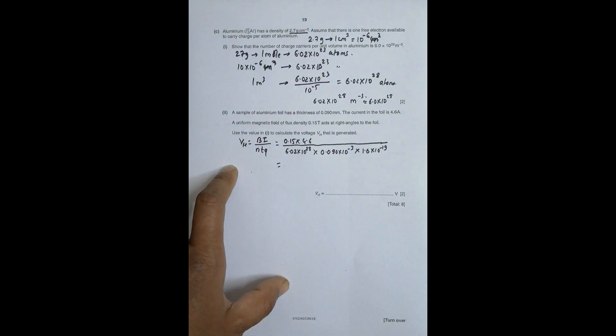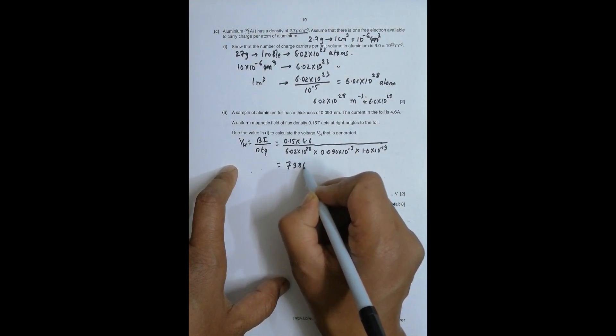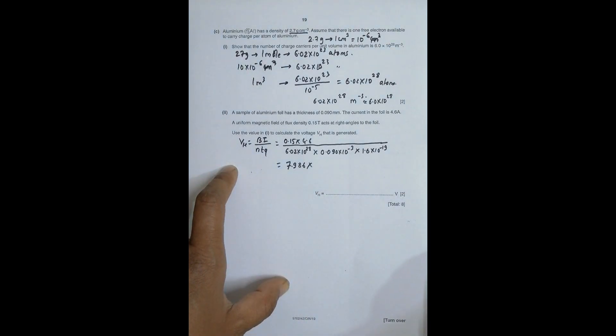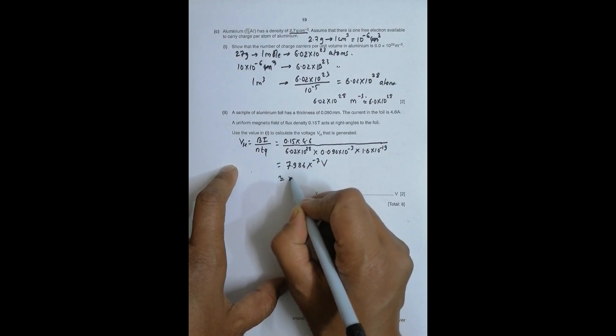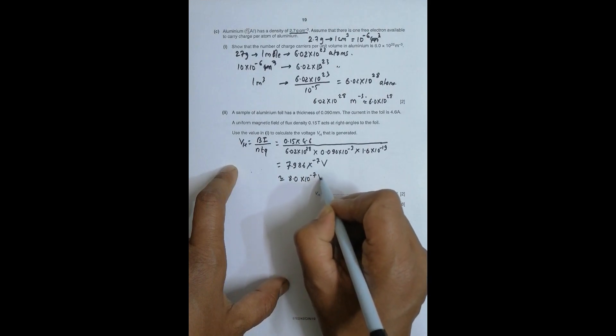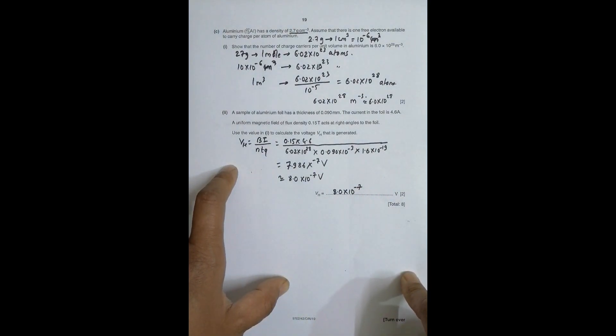Let me do the calculations. So 0.15 times 4.6 divided by bracket 6.02 exponent 28 times 0.090 exponent minus 3 times 1.6 exponent minus 19 bracket close equals 7.986 times 10 to power minus 7 volts. If I write it in scientific notation it becomes 8.0 times 10 to power minus 7 volts. So that's the complete workout for this question.